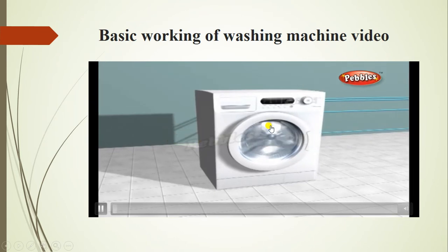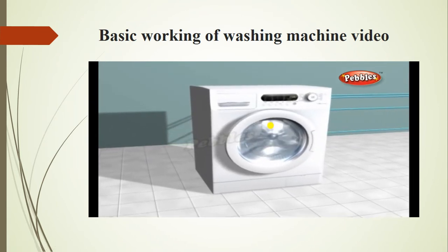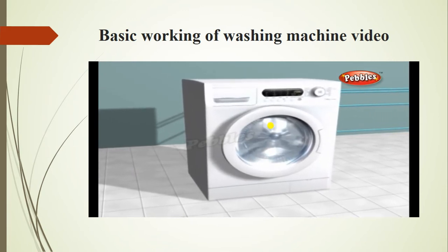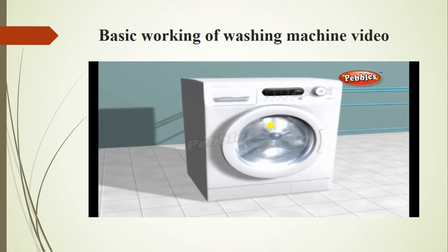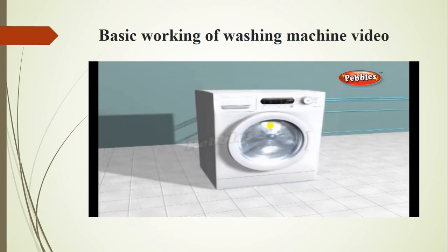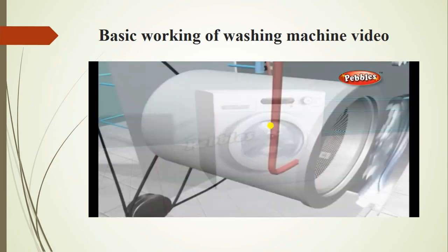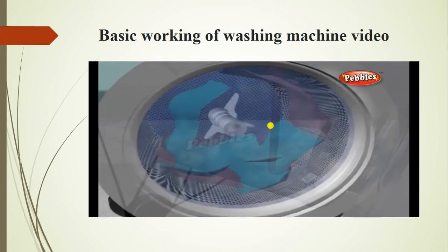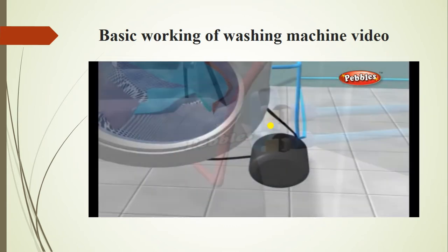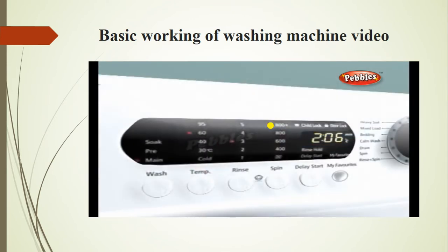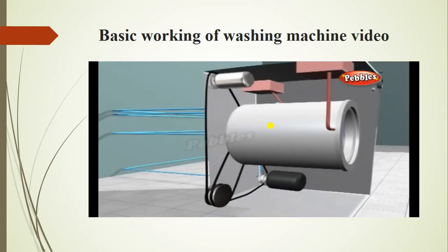A washing machine, or washer, is a machine designed to clean laundry such as clothing, towels, and sheets. Hand-operated washing machines appeared in the 1850s, and the first modern machine was developed in 1910 by American Alva J. Fisher. To understand top-loading washing machines, the shared characteristics include: tub on a vertical axis, central agitator, motor and pump, fill valve, timer and selector switches, clutch and brake mechanism, and motor coupler and belt.